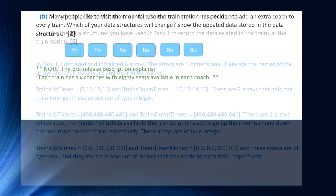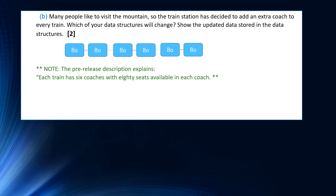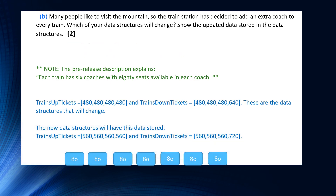For question B, many people like to visit the mountain — let's add an extra coach to every train. It's important to understand what the word coach means. The pre-release explains each train has six coaches with 80 seats available in each coach. So what's going to change is trains_uptickets and trains_downtickets. Originally initialized to 480 across the board (with 640 for the last down train), the new data stored would be 560, 560, 560, 560 for up tickets, and 560, 560, 560, 720 for down tickets — representing seven coaches with 80 seats each, except the last train which has nine coaches.